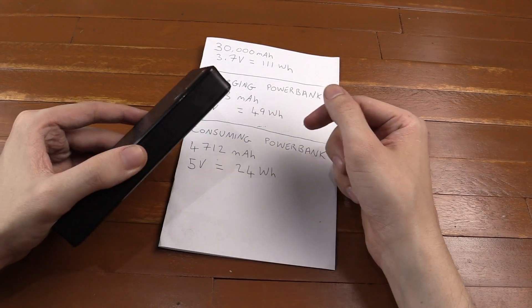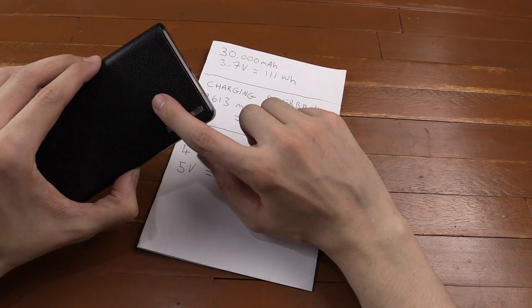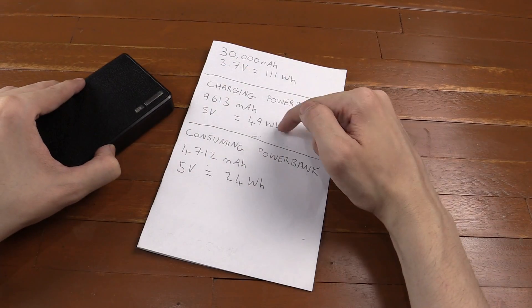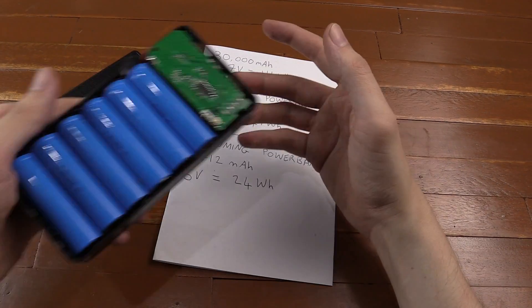Now one of the reasons why I suspect we got a lot less out than what we put in is simply because when we're charging this, it's charging at 5 volts, and it has to drop that voltage down to say 4.2 volts to charge a 3.7 volt battery. So a lot of that is probably wasted in heat. So although it consumed 50 watt-hours to charge this, a lot of that was probably just wasted.